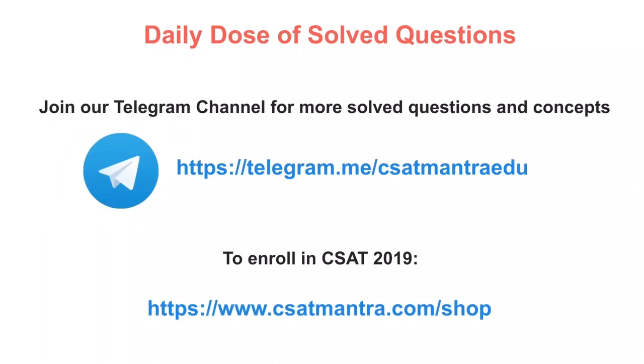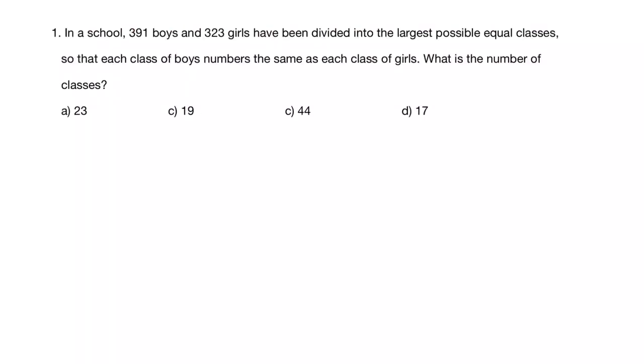Both links are given below in the description. In a school, 391 boys and 323 girls have been divided into the largest possible equal classes, so that each class of boys numbers the same as each class of girls. What is the number of classes?